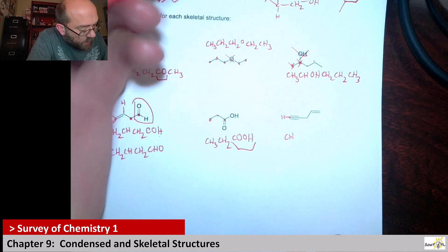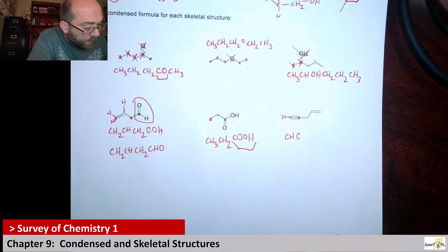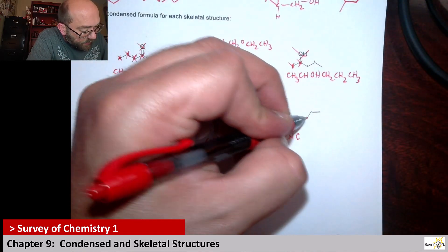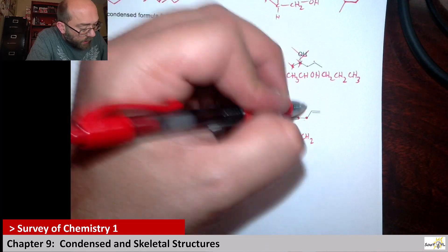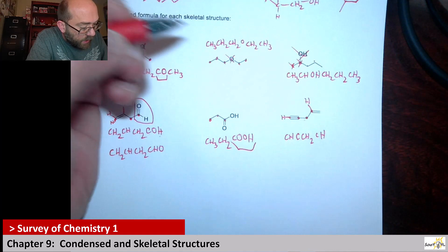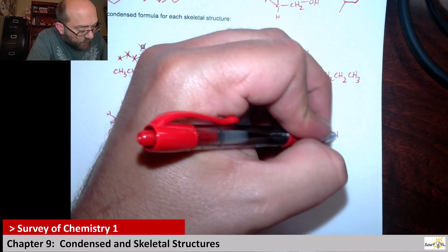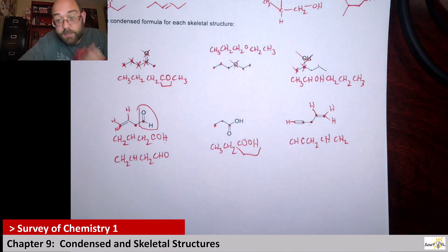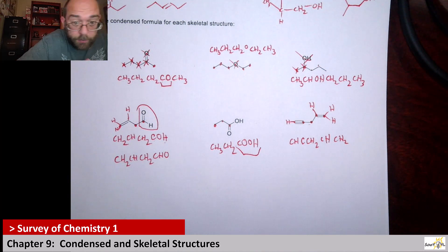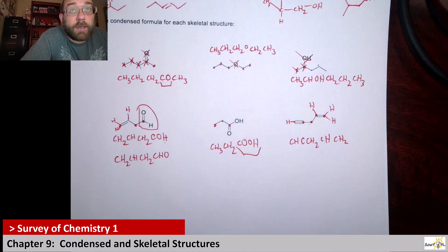Next: this carbon has one hydrogen so we have CH, then CH2. This carbon has four bonds shown so no hydrogen — just C by itself. Then CH2, then a CH with one hydrogen, then CH2 giving it four bonds. With condensed structures it's easy in the skeletal form to see double bonds and triple bonds, but in condensed you really have to track whether all carbons have four bonds.